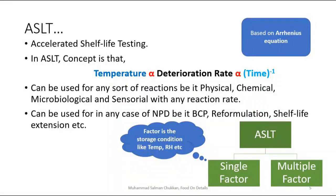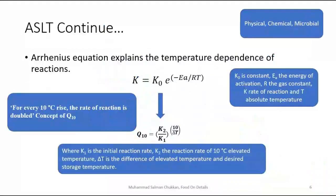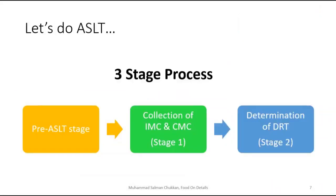ASLT is also available in a multi-factor format where multiple factors such as temperature and RH come into play. The Arrhenius equation tries to explain the temperature dependence of reaction rate. Testing with the basic equation k = k₀ × e^(−Ea/RT) would require finding Ea or k₀ at every interval. To simplify this, the concept of Q10 has been introduced. Q10 is the temperature coefficient representing how the reaction rate changes when temperature is increased by 10°C.